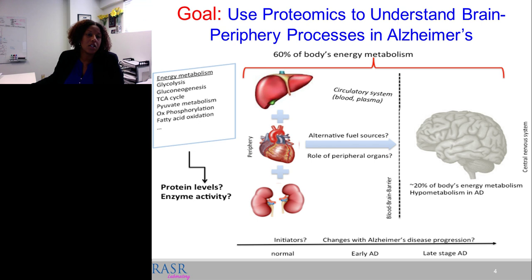We study peripheral tissues — liver, heart, kidney, lung, and blood plasma — tracking how proteins change with disease progression. We look very early at potential initiators and follow them through various stages of disease. Our goal is to understand biological processes including energy metabolism. With this big-picture context in mind, we realized we needed to focus on developing technology suitable to address these problems.